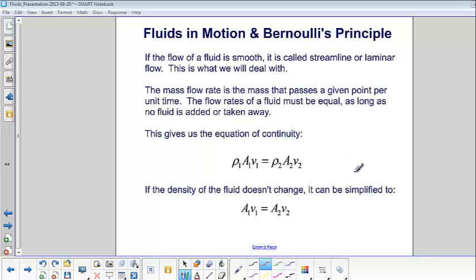If the density of the fluid does not change, it can be simplified to A1V1 equals A2V2. The same amount of fluid has to pass by a given point in a given amount of time.